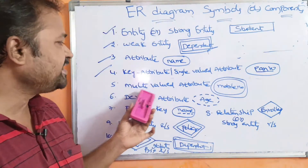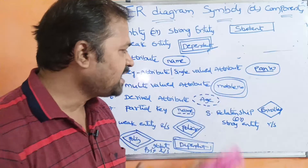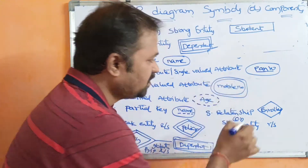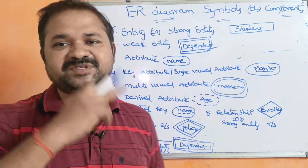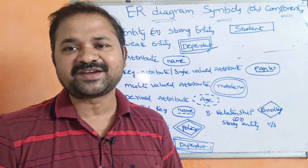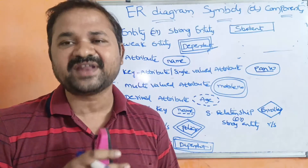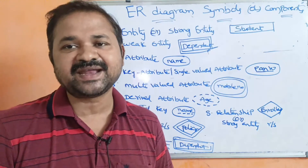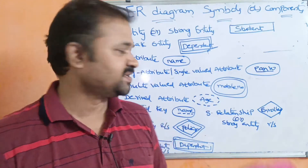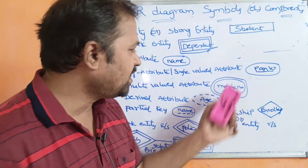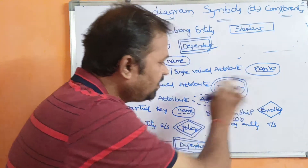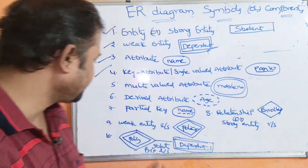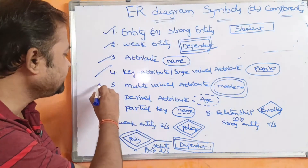Next is the multi-valued attribute. Multi-valued attribute is represented by a double ellipse symbol. Multi-valued attribute means if an attribute has multiple values — for example, a person can have multiple mobile numbers. So 'mobile number' is placed within the double ellipse.